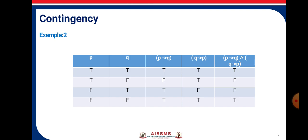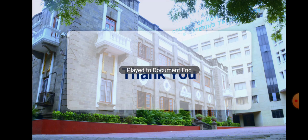So, in today's class we have seen that when we get all truth values as T, it is tautology. When we get all truth values as F, it is contradiction. And when we get the truth values as either T or F, it is contingency. Thank you.